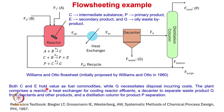Both C and E hold value as fuel commodities, whereas G requires disposal and therefore a cost is incurred. The plant comprises a reactor, heat exchanger for cooling reactor effluents, a decanter to separate the waste product G, and a distillation column for product P separation.